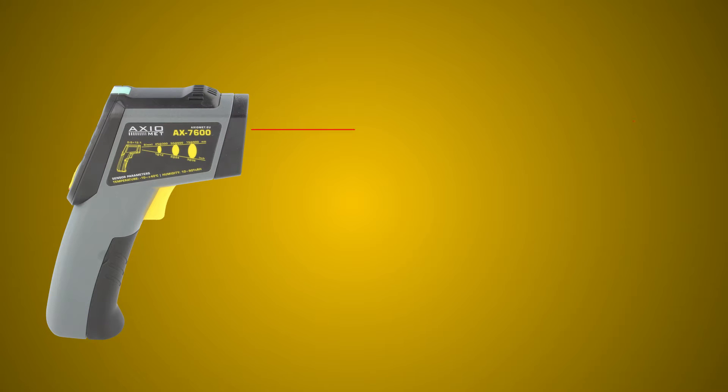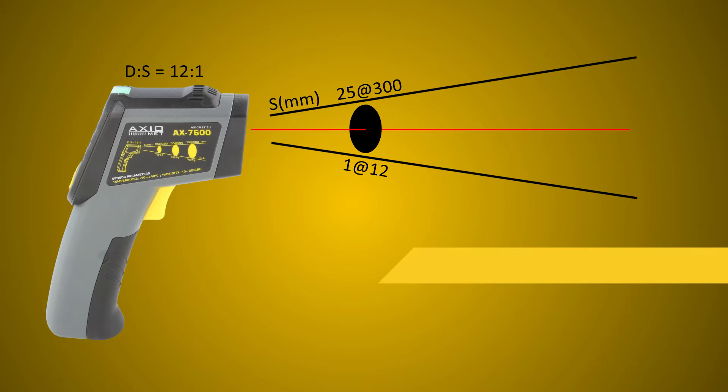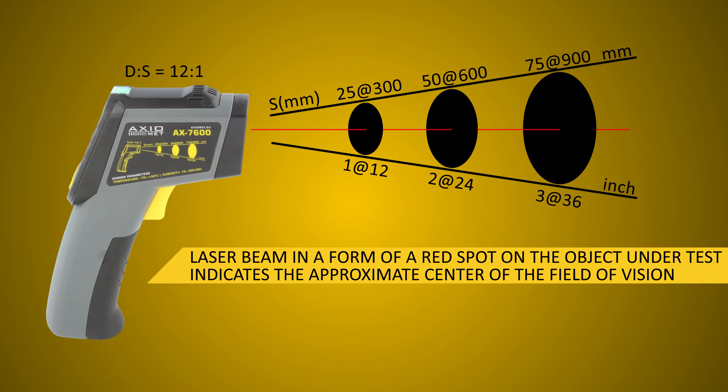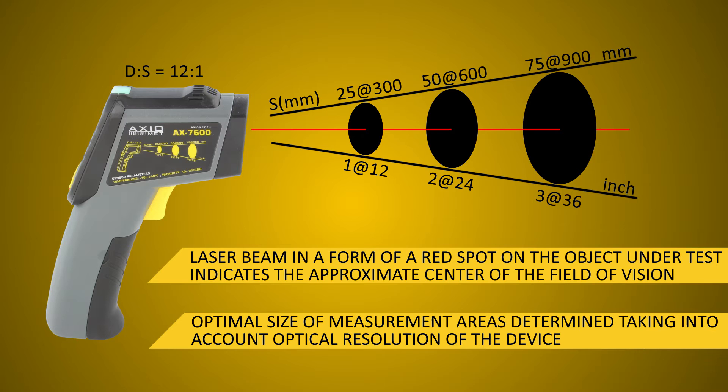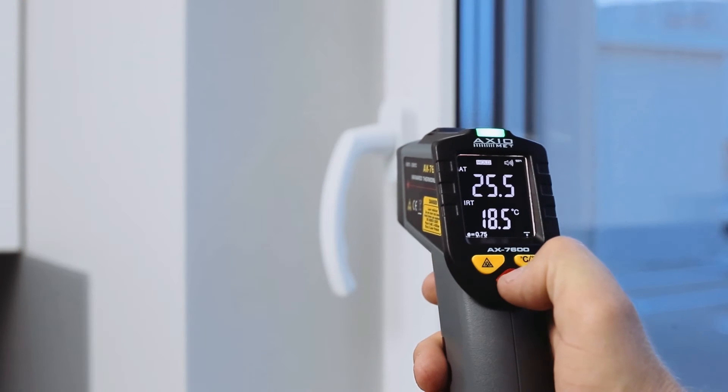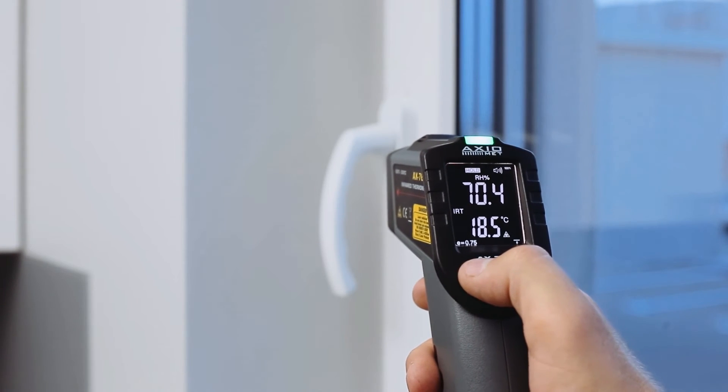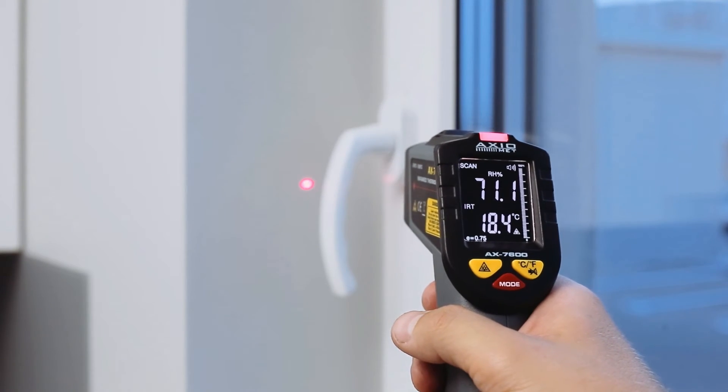A laser pointer isn't designed to measure temperature. The pyrometer calculates the mean temperature from the measurement area. That's why the field of vision of the pyrometer cannot go beyond the object under test. The smaller the object, the smaller the distance of measurement. If air relative humidity exceeds 45%, you can measure dew point for ambient temperature.